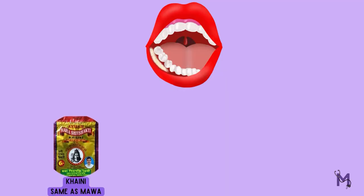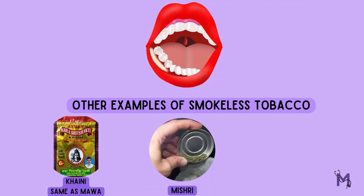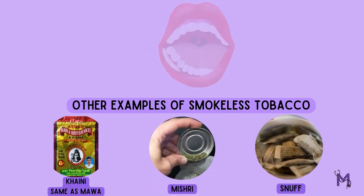Another example of the smokeless type is very similar to mawa both in composition and use. Other examples of the smokeless type include mishri, snuff, and others.